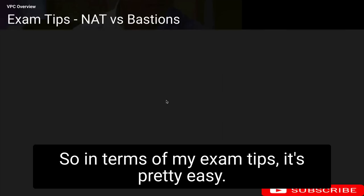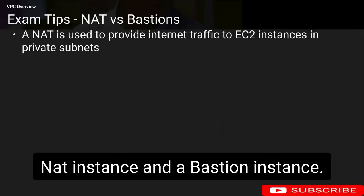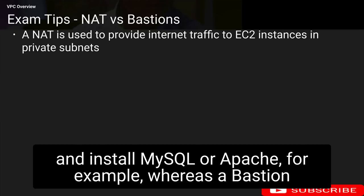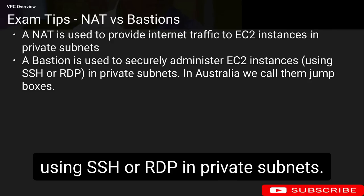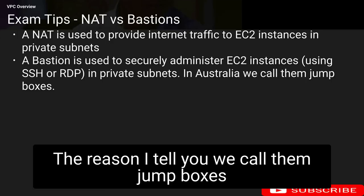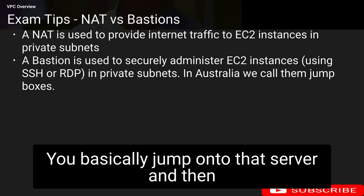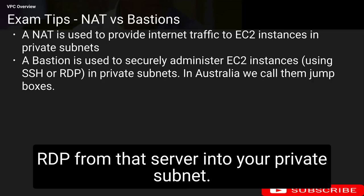For exam tips, just remember the differences between a NAT instance and a bastion instance. A NAT instance is used to provide internet traffic to EC2 instances in private subnets — so they can install MySQL or Apache, for example. A bastion instance is used to securely administer EC2 instances using SSH or RDP in private subnets — in Australia we call them jump boxes. You basically jump onto that server and then from there you can SSH or RDP into your private subnet.